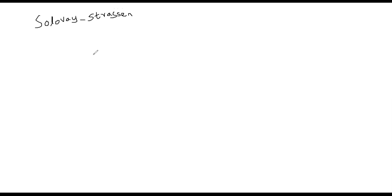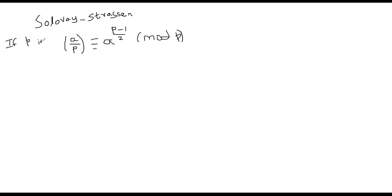So what is the core idea of this algorithm? The algorithm uses one of Euler's theorems. If P is prime, then we can be sure that the Legendre symbol — denoted A with bar P — satisfies a certain property. The Legendre symbol applies when P is prime; otherwise, when P is a composite number, it's called the Jacobi symbol.